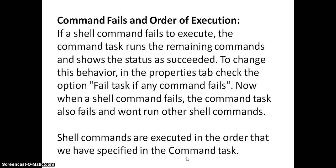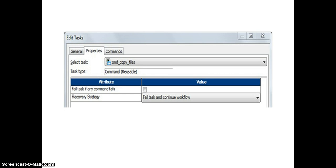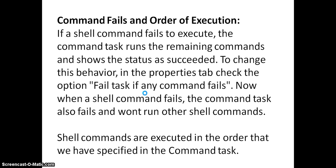We have another option: command fails and order of execution. If a particular shell command fails to execute, by default the command task runs the remaining commands and shows the status as succeeded. To change this behavior — to fail the complete task if one command fails — we have an option in the Properties tab called 'Fail task if any command fails'. If we enable this, the complete session will fail if any one of the commands fails. The shell commands are executed in the order specified in the command task.